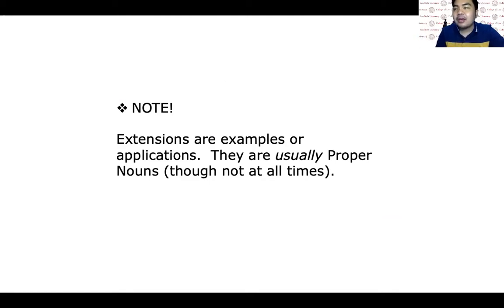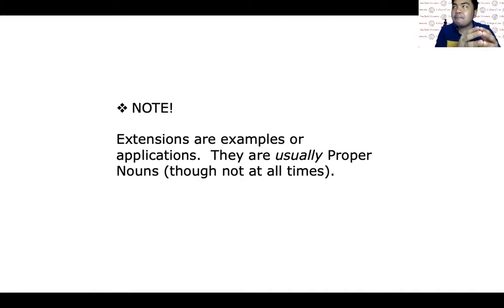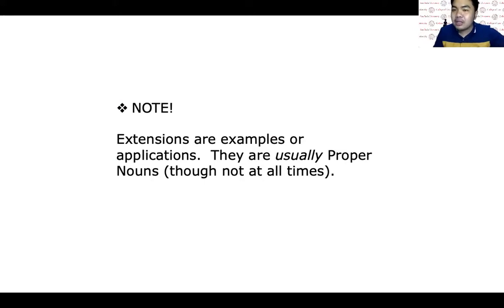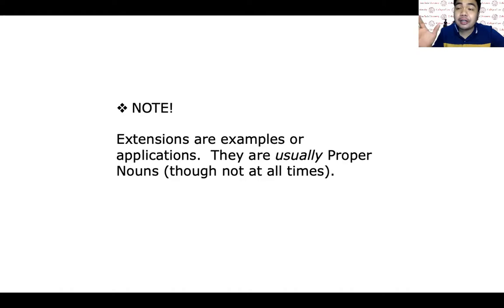With our example of religion and Islam — doon sa general word which is religion, there is greater extension. Why? Because there are more examples of religion than of Islam. When you say religion, you can refer to Christianity, the Catholic Church, Buddhism, Hinduism, Catholicism, Shintoism — you can give so many applications and examples. That is why you have greater extension when the word given is a common noun or general noun.